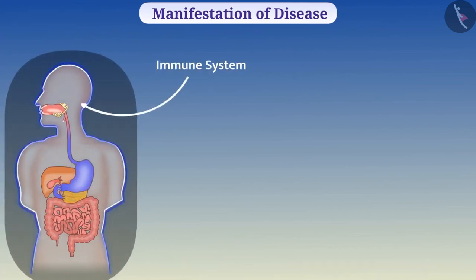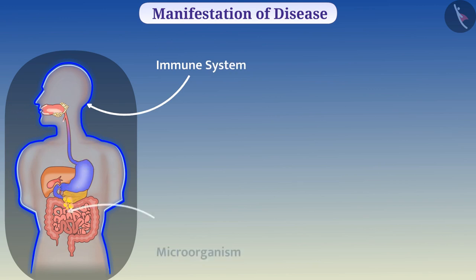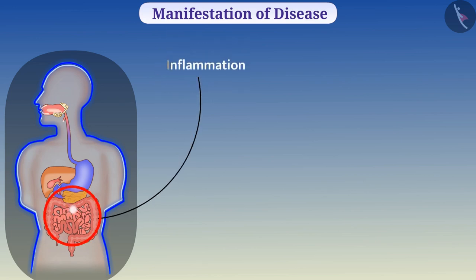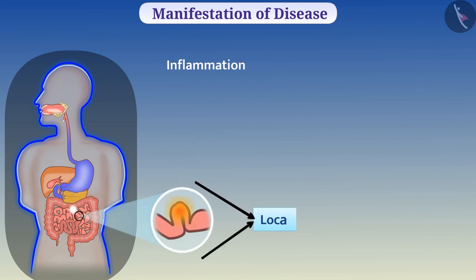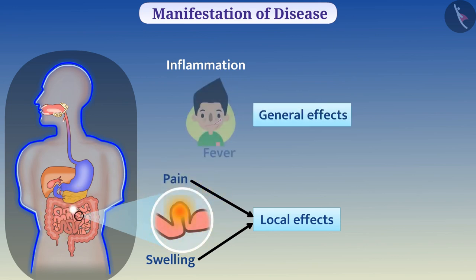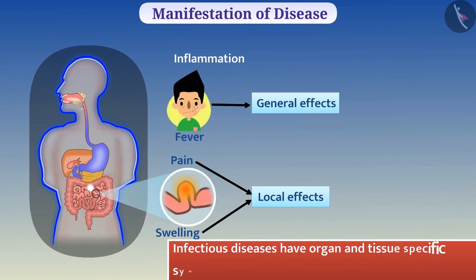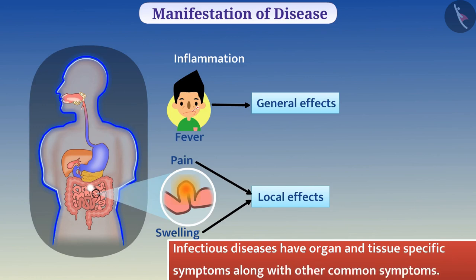The immune system in our body protects us from diseases. When an infection occurs, the immune system becomes active and forms various cells. These cells migrate to the affected organs or tissue and kill microorganisms. This process is called inflammation. Due to inflammation, local effects such as swelling and pain, and general effects such as fever, occur. Therefore, infectious diseases have organ and tissue specific symptoms along with other common symptoms.